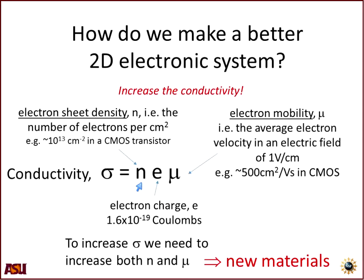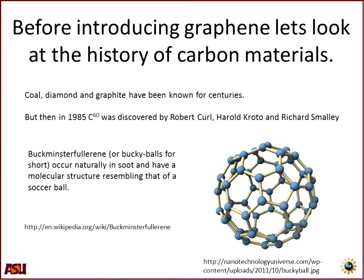I can't change the electronic charge. I can only change the sheet density N and the electron mobility mu. So those are the CMOS numbers. If I want to do better, I need to explore new materials — and that's really where this explosion of two-dimensional electronic systems has come from: new materials that can give us higher conductivity and better computer switches.